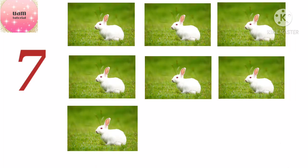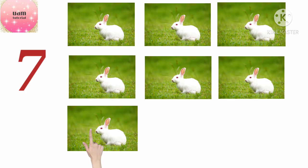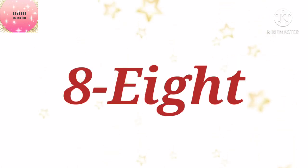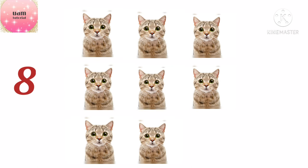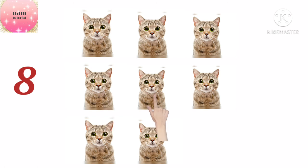Seven rabbits: one, two, three, four, five, six, seven. Eight — E-I-G-H-T — here there are eight cats: one, two, three, four, five, six, seven, eight.